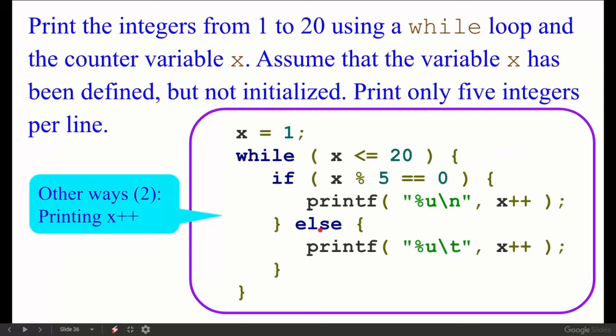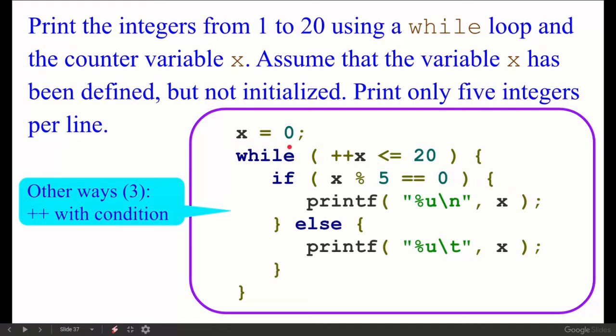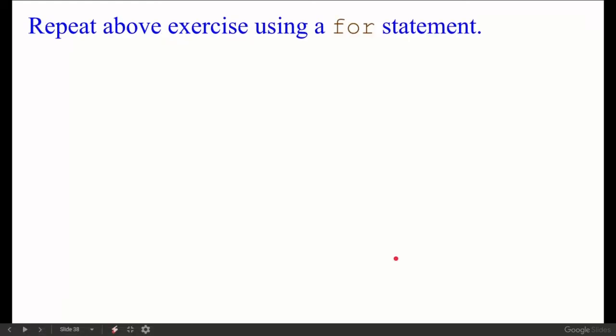After that I am keeping an if statement. If x modulo 5 is equal to 0, then the position will print new line. After that I am incrementing x. So this is the work of 1 to 20. This is the work of the while statement. We will print 5 numbers per line.